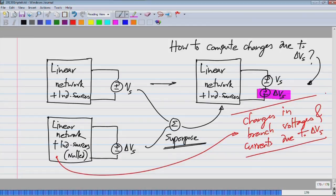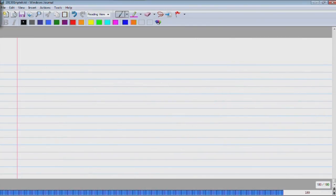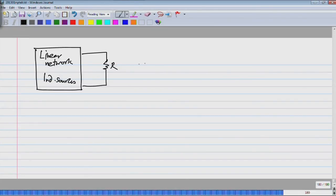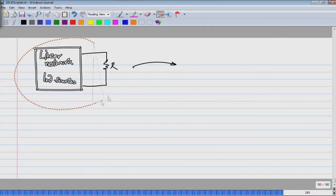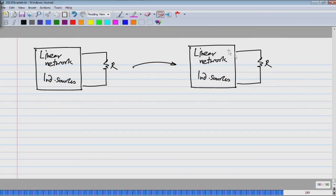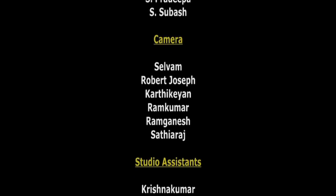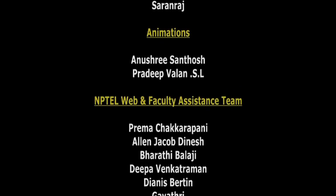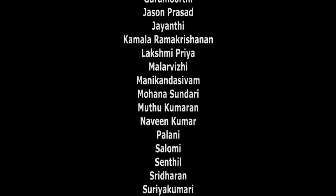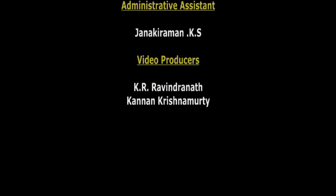Now, let's say instead of a voltage source, I have a resistor R. I have a linear network plus independent sources here, and then I change this one resistance to R plus delta R.